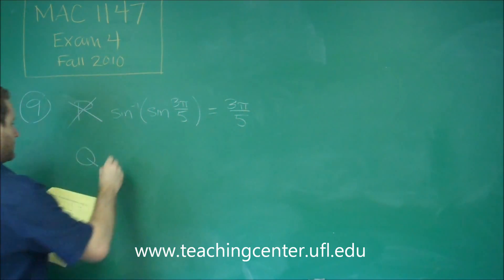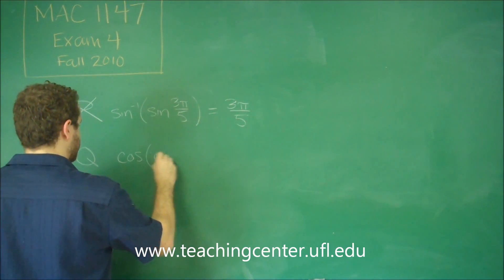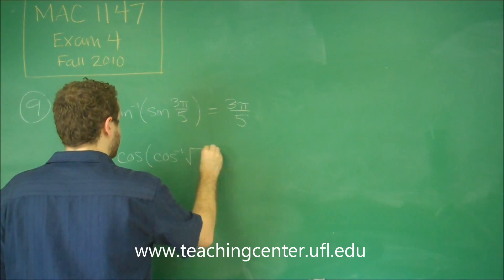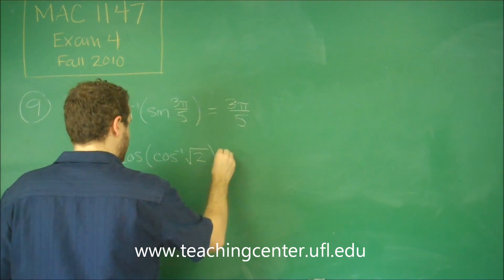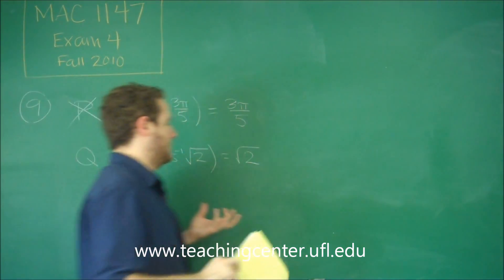Alright, for Q, cosine of arc cosine of square root of 2 equals square root of 2. Okay, so let's take this one and see what happens here.